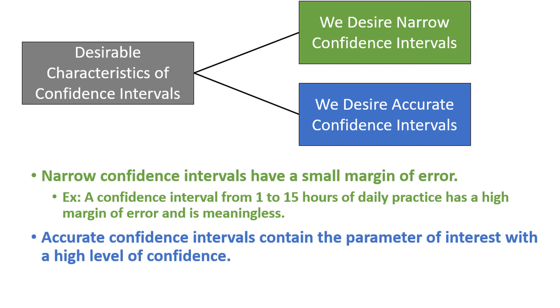By accurate, I mean that we would like any given confidence interval to contain the population parameter of interest with a high level of confidence. Generally, we specify this by a confidence level, such as 90%, 95%, or 99%. Higher levels of confidence, such as 99%, mean that the confidence interval has a higher chance of actually containing the population parameter.